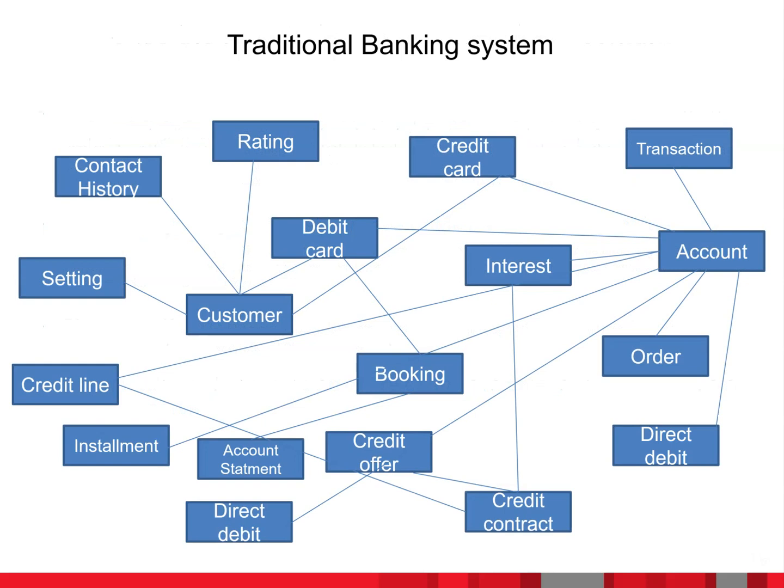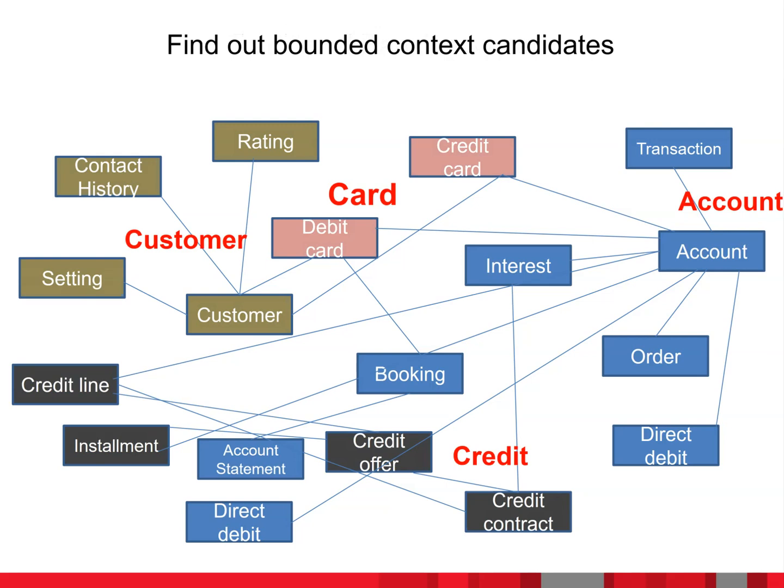Let's take the example of a traditional banking or financial system with objects like customer, accounts, credit cards, statements, and transactions. A product owner or banking expert will know these terms, but for the developer or architect defining the right bounded context candidates can be challenging — it requires functional domain knowledge. If you try to group these candidates together, you can come up with the right candidates for bounded contexts. Here we have identified customer, card, account, and credit as the right bounded context objects.